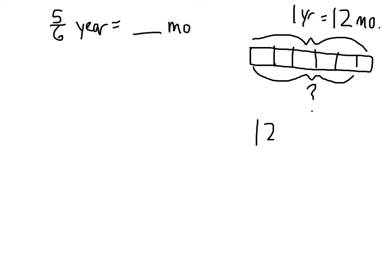So 12 months divided by 6 equal parts is 2 months per unit. I have 5 units times 2 months per unit. I'm going to get 10 months.